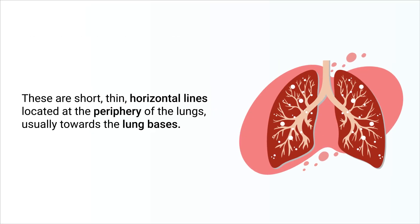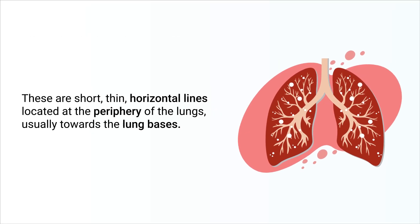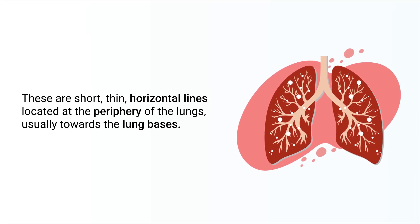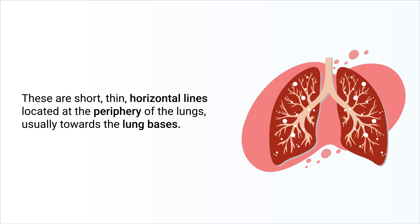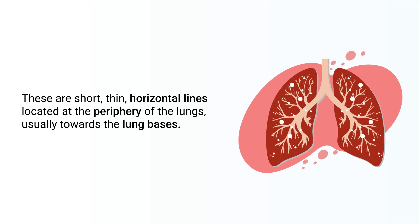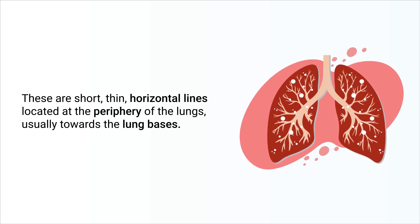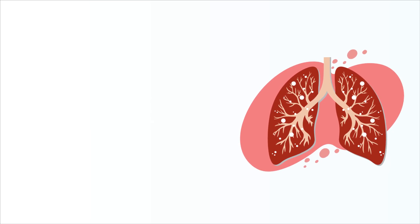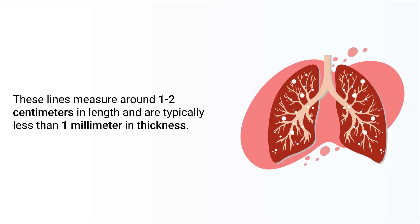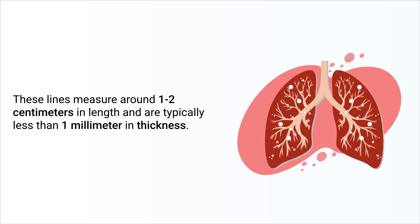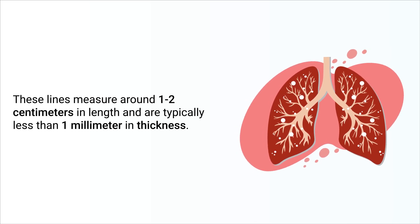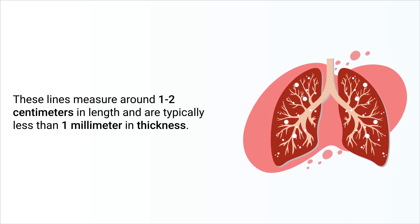These are short, thin horizontal lines located at the periphery of the lungs, usually towards the lung bases. These lines measure around one to two centimeters in length and typically less than one millimeter in thickness.